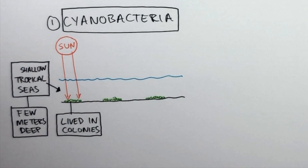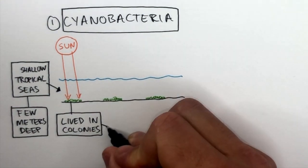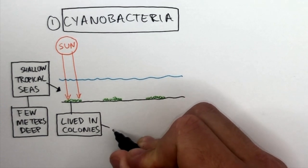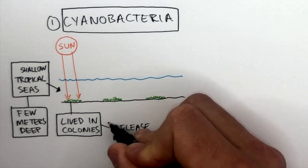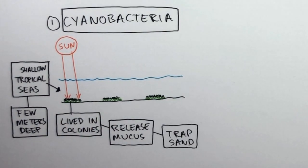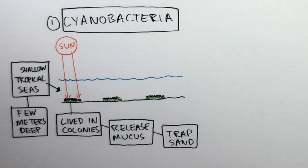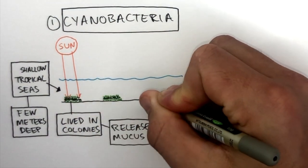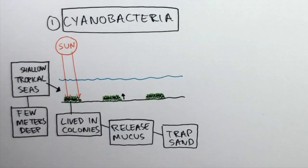Living in tropical, shallow seas was perfect for them because here the sunlight was very intense, increasing the rate of photosynthesis. As the cyanobacteria would live and grow, they would release mucus. This mucus would trap sand, as shown here. And this sand would block the sunlight, meaning no photosynthesis would take place because the sand is blocking the sunlight.